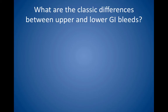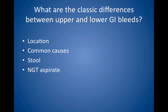What are the classic differences between upper and lower GI bleeds? With upper GI bleeds, the location typically is proximal to the ligament of Treitz, but with a lower GI bleed, it is distal to the ligament of Treitz. Common causes of upper GI bleed include gastritis, ulcers, varices, and esophagitis. Common causes of lower GI bleed include vascular ectasia, diverticulosis, colon cancer, colitis, inflammatory bowel disease, and hemorrhoids. With an upper GI bleed, stool is tarry and black, so-called melena. With a lower GI bleed, bright red blood is seen in the stool, called hematochezia. An NG tube aspirate in an upper GI bleed is positive for blood, but with a lower GI bleed, it is negative for blood.